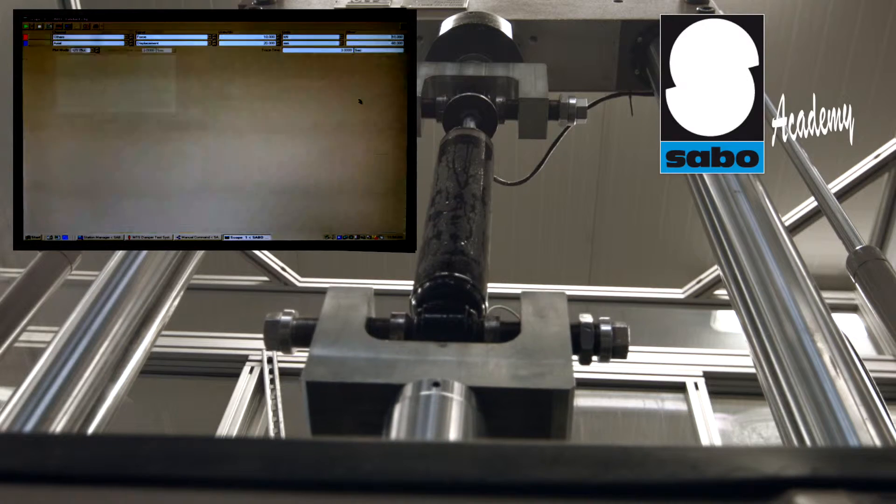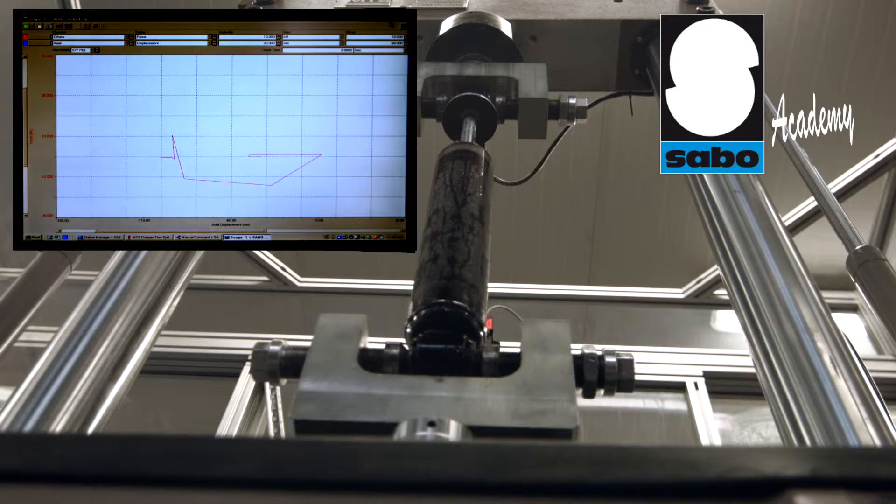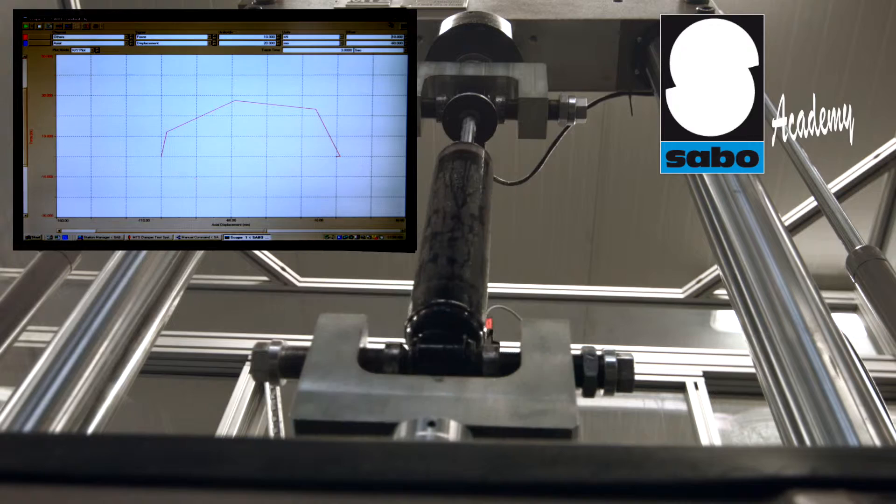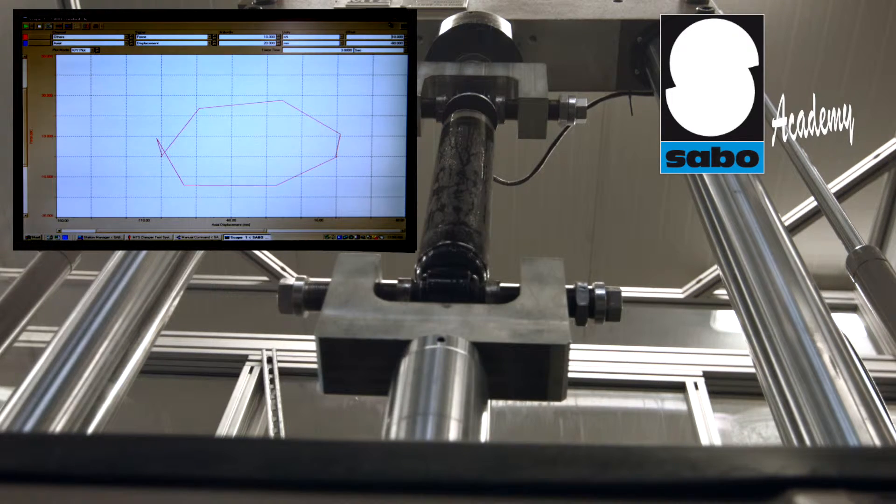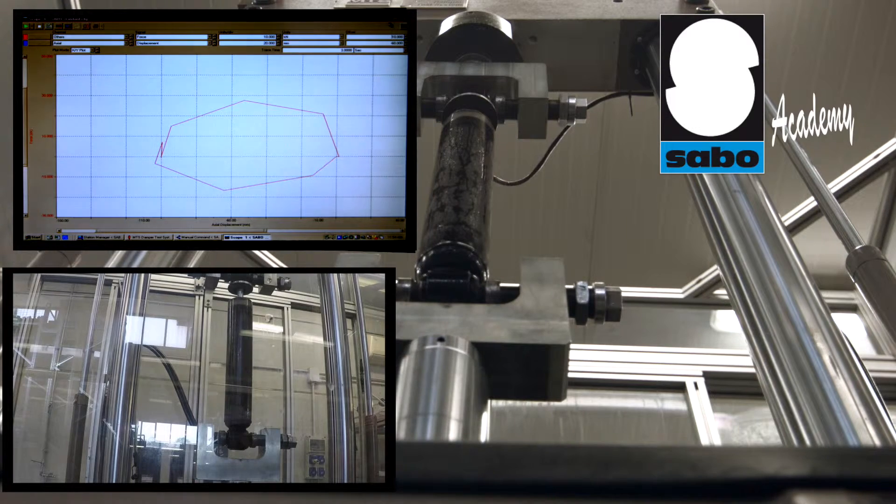Afterwards there begins a third test phase. This is called the square wave phase and involves ten complete cycles in which the shock absorber undergoes a thrust on its vertical axis at a speed greater than four meters per second. The stroke is established as a function of the shock absorber's size.